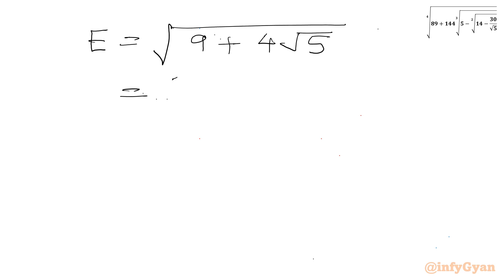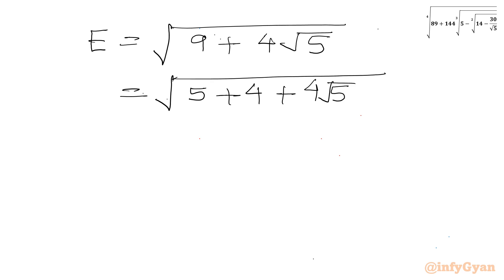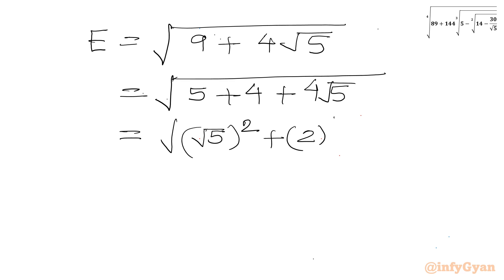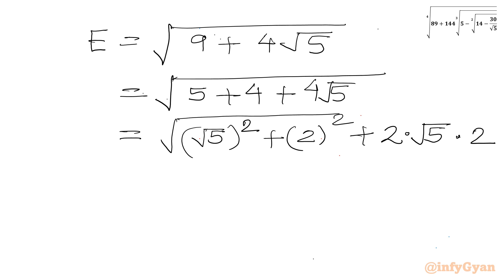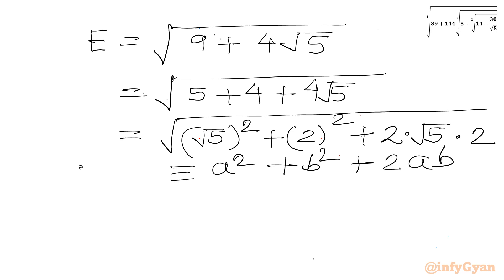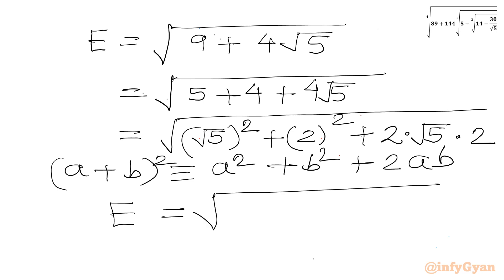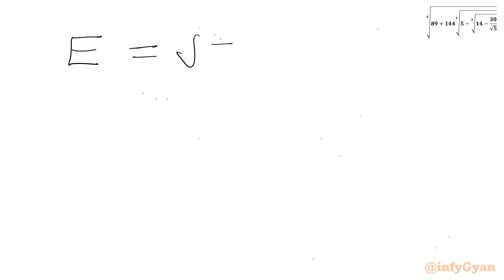Again we split: 9 plus 4 root 5 equals 5 plus 4 plus 4 root 5. Writing 5 as (root 5) squared, 4 as 2 squared, and 4 root 5 as 2 times root 5 times 2, this is again the identity a² + b² + 2ab = (a + b)². So expression E equals the square root of (root 5 plus 2) squared. Cancelling square root with the square, our final answer is E equals root 5 plus 2.